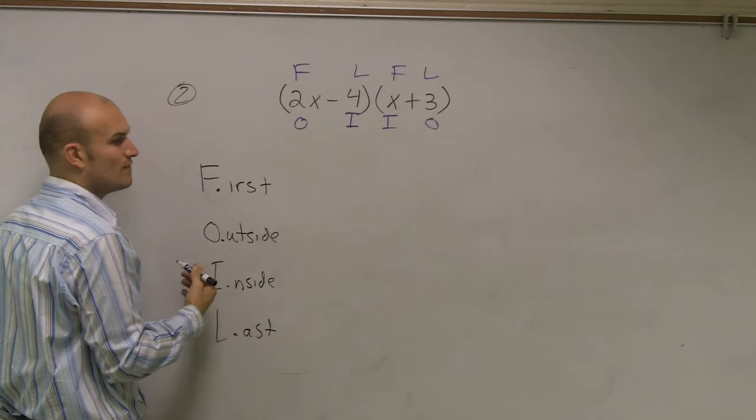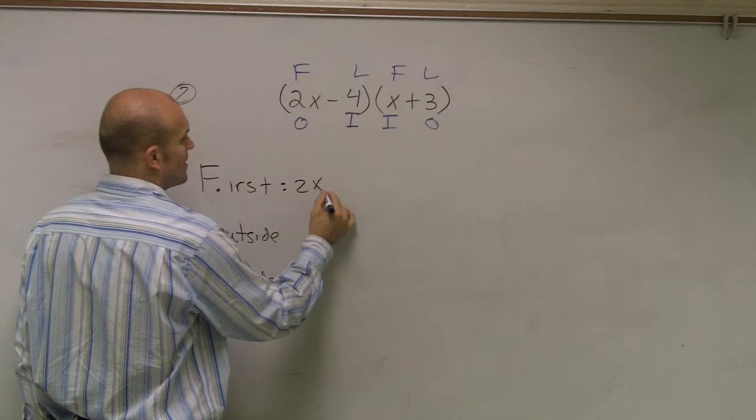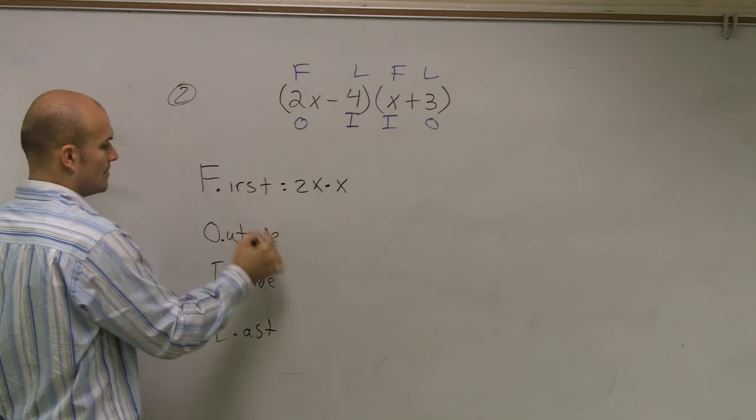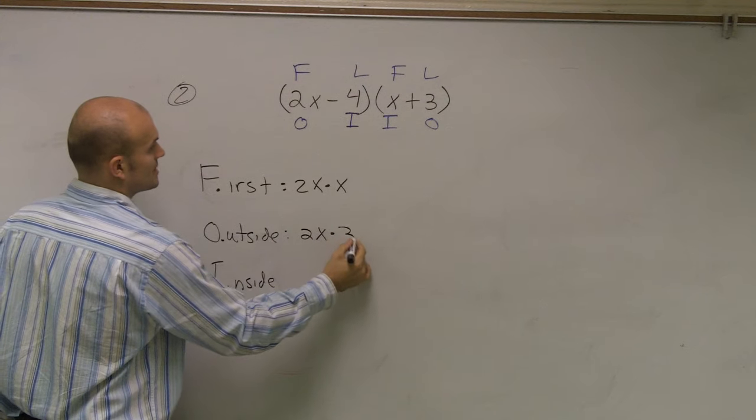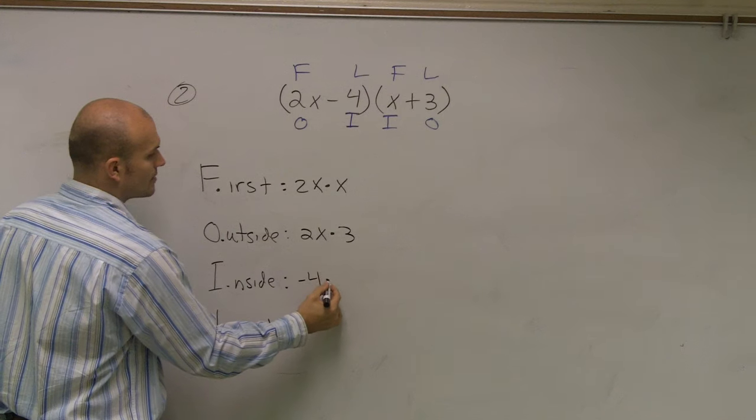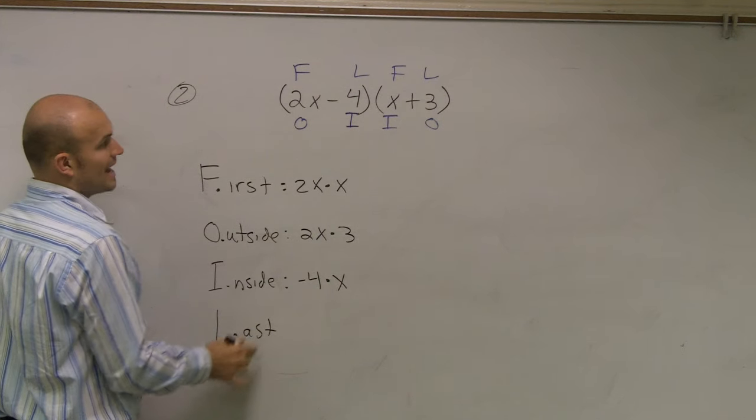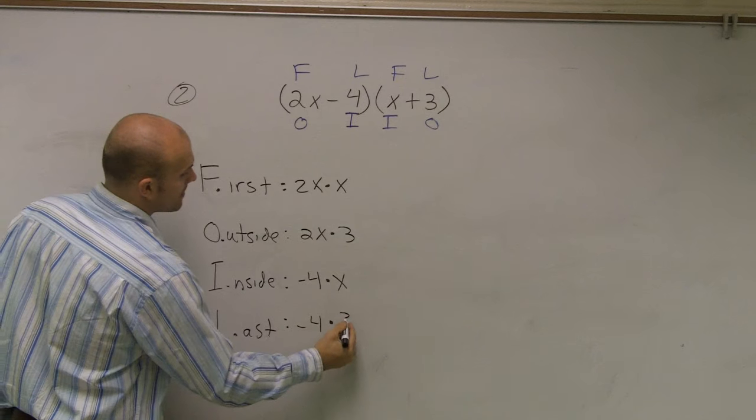Just multiply the first times the first. So this becomes 2x times x. Outside becomes 2x times 3. Inside, negative 4 times x. Last becomes negative 4 times 3.